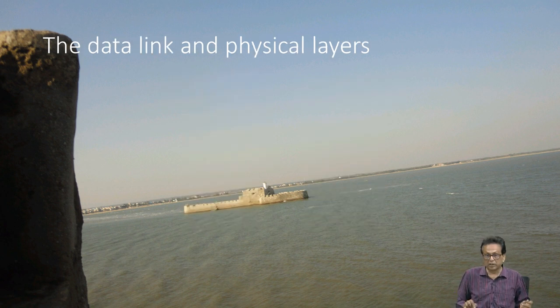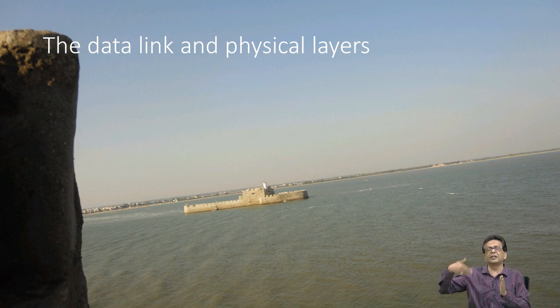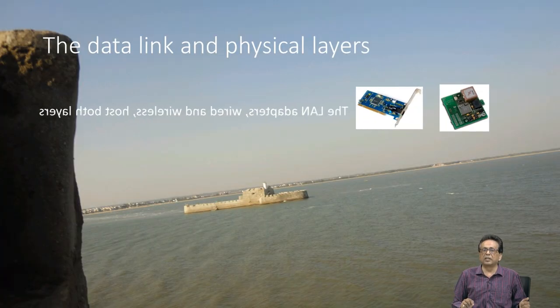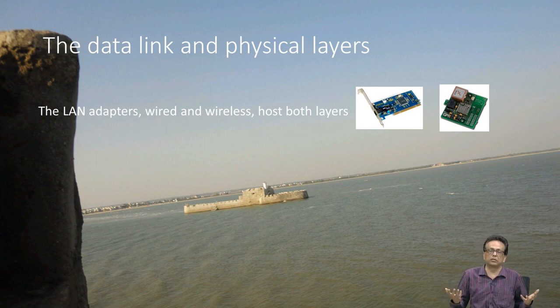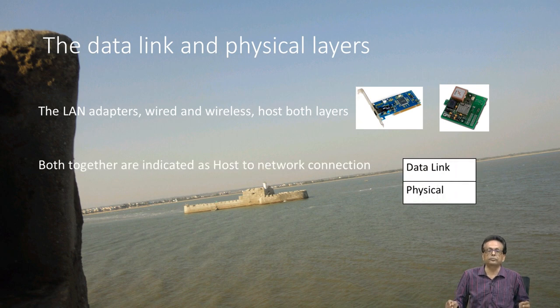Let us start with the data link and physical layers. We have already seen the job of these layers — physical layer and data link layer. Now we are going to model that in the form of a protocol. These data link and physical layers are mapped into wired and wireless cards. These cards are nowadays even part of the motherboard; you do not have separate cards. Sometimes they are called host-to-network, so do not get confused.